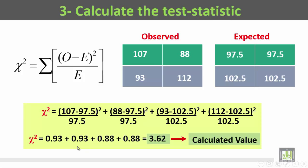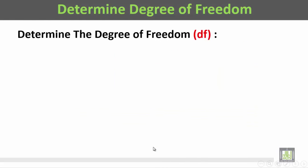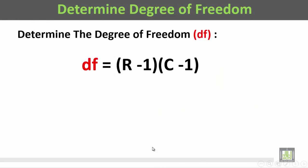The total chi-square is 3.62, and this is the calculated value. Next, we are going to determine the degree of freedom.